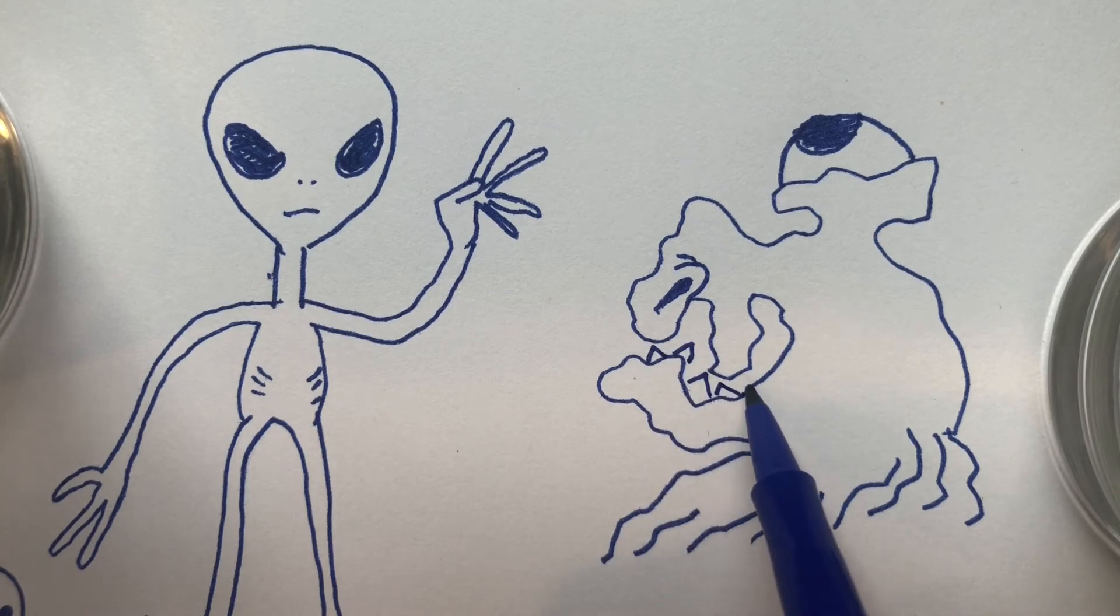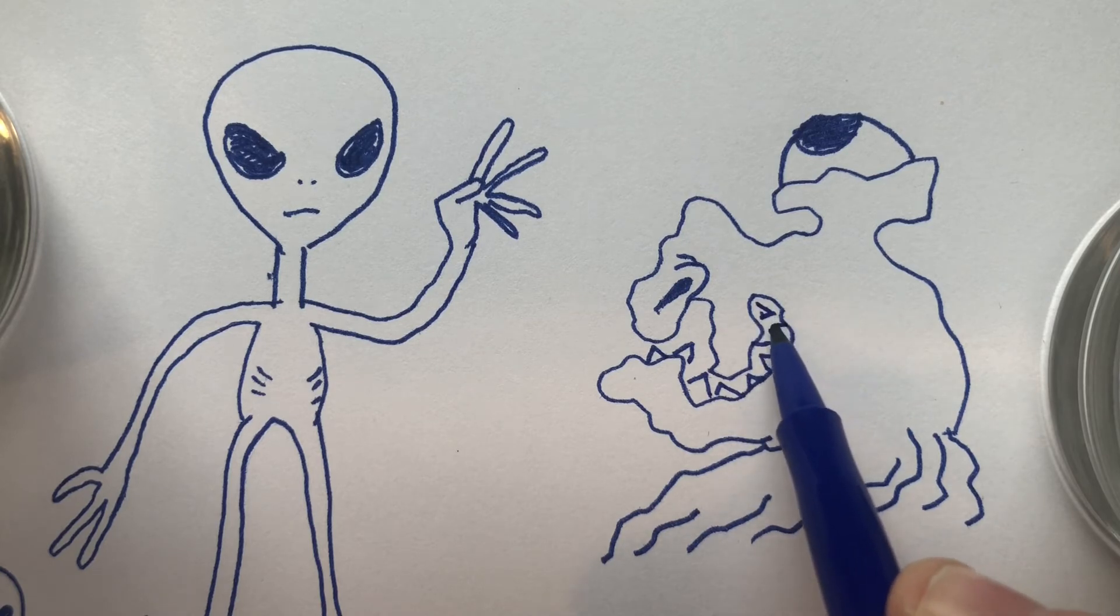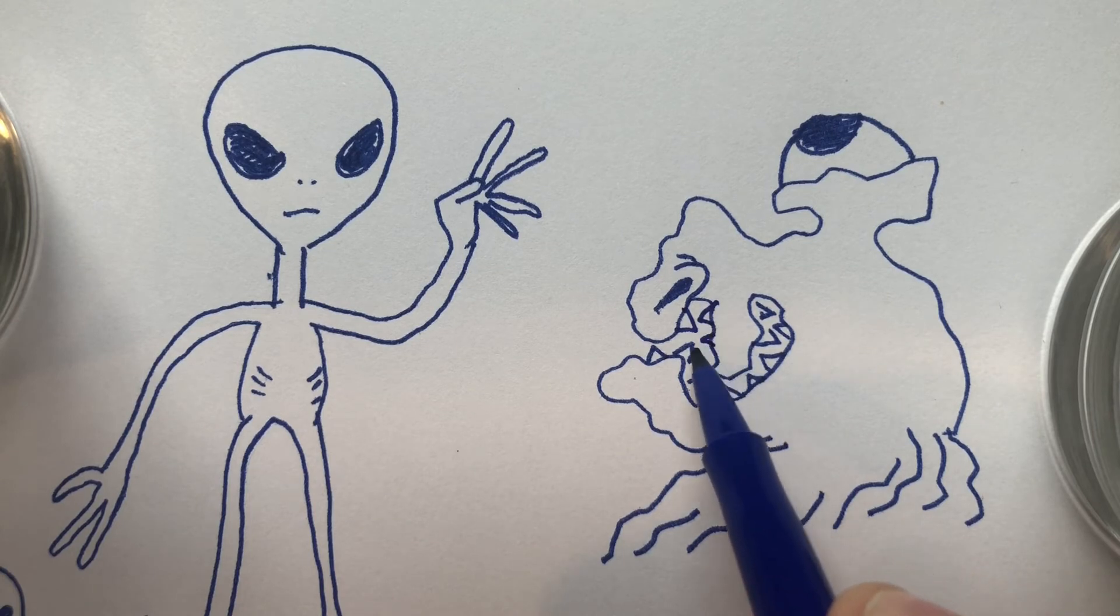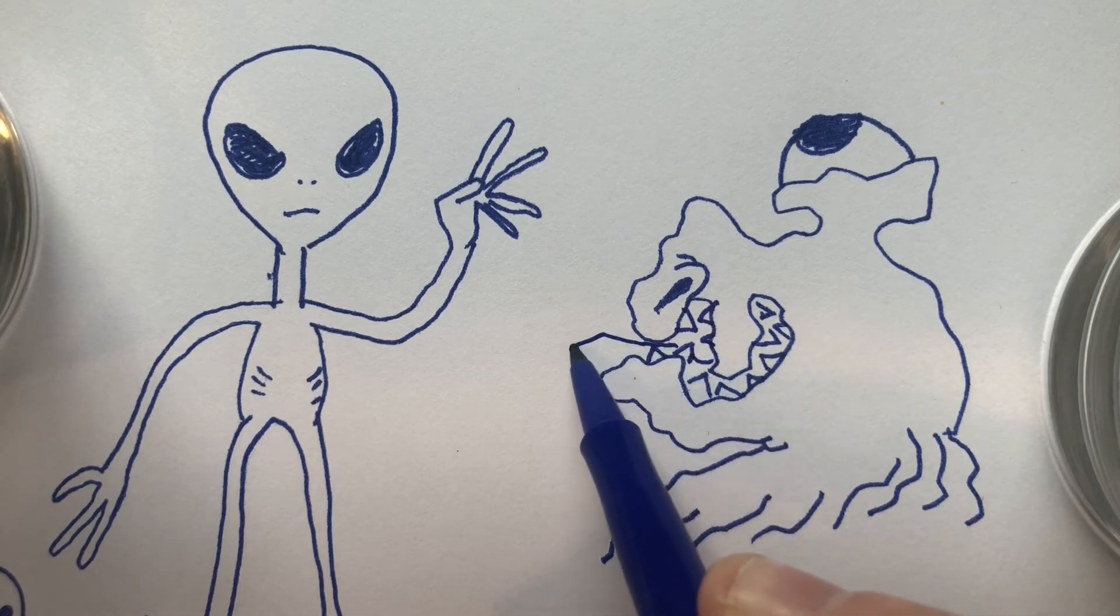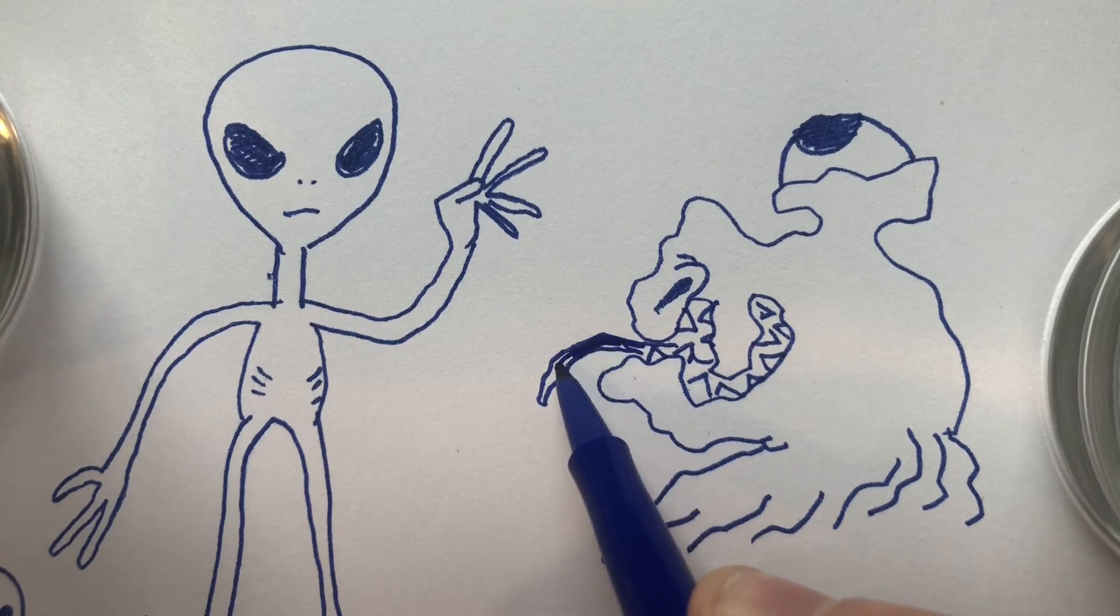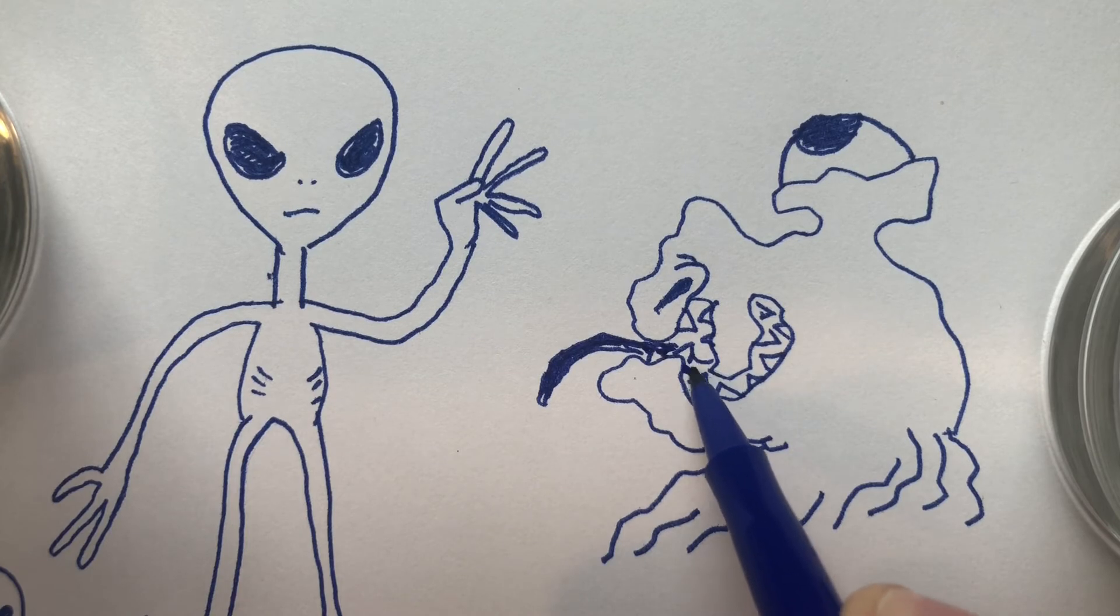I'll put some teeth. Oh wow, this guy looks really weird. Now again, you should not be trying to copy mine because I was making this up as I went along. So you will do your own alien where you make it up as you go along. Just start with a line and see where it goes and use your imagination to sort of pick out the different parts of the alien.